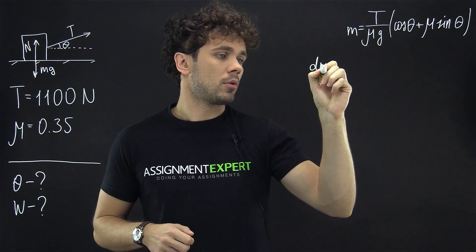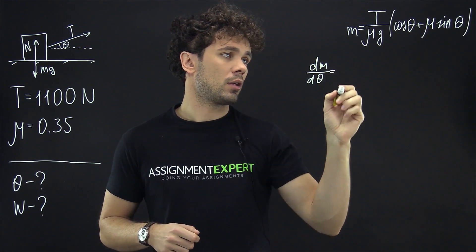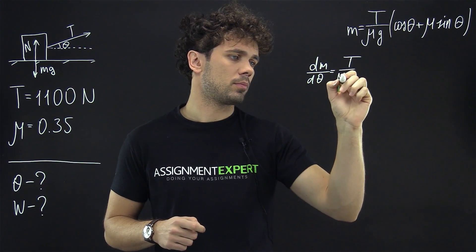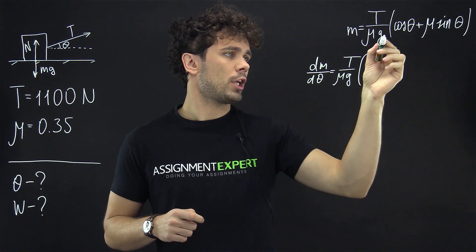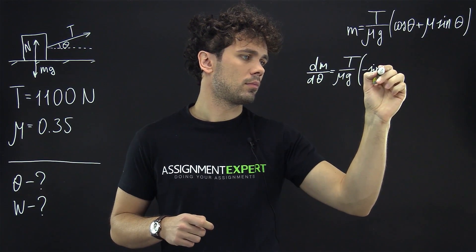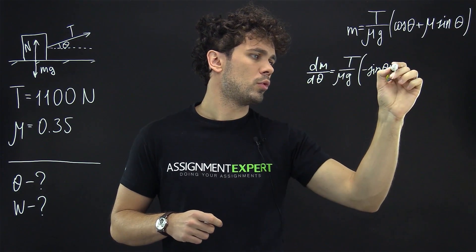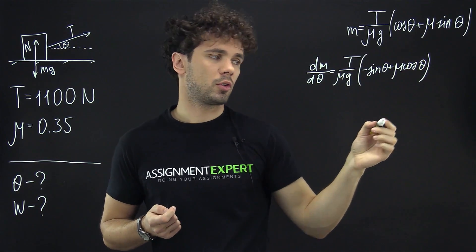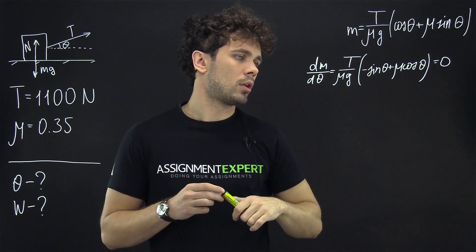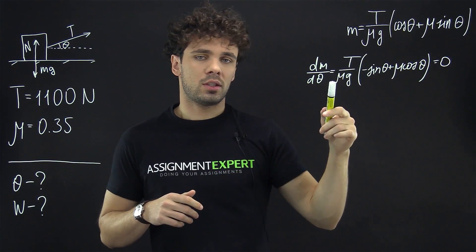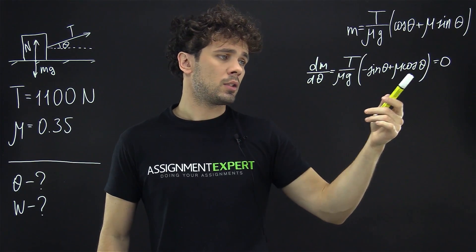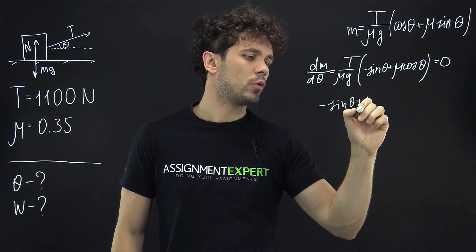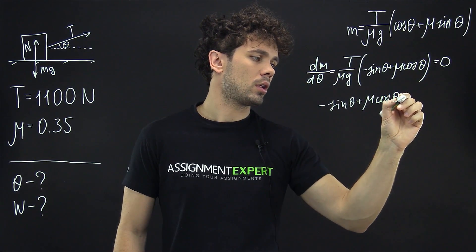So derivative of M with respect to theta gives us the following. First we have this term without changes T over mu times g. Then in braces we have negative sine of theta plus mu times cosine of theta. And now this expression should be equal to zero. Obviously if we take this part and move it to the right side we will get zero. So we're left with negative sine of theta plus mu times cosine of theta equals zero.